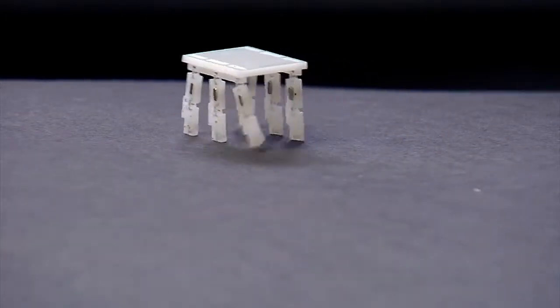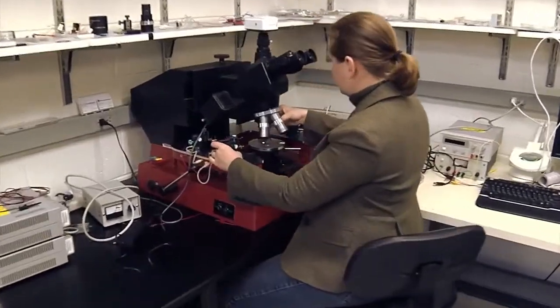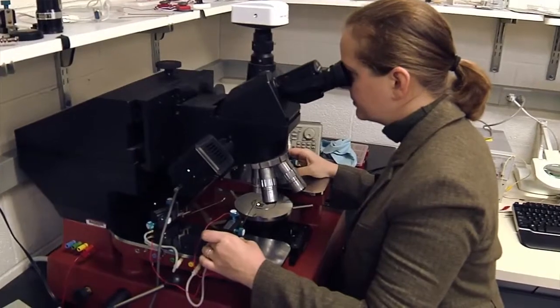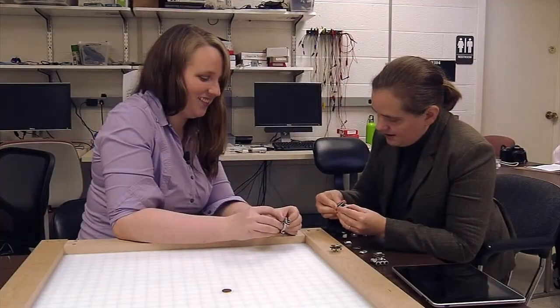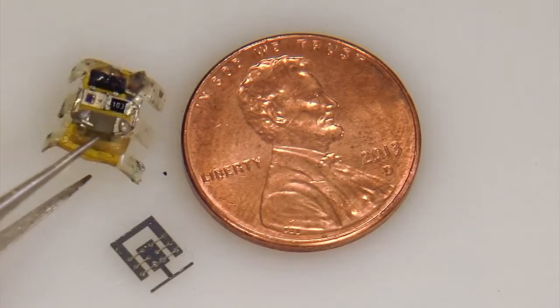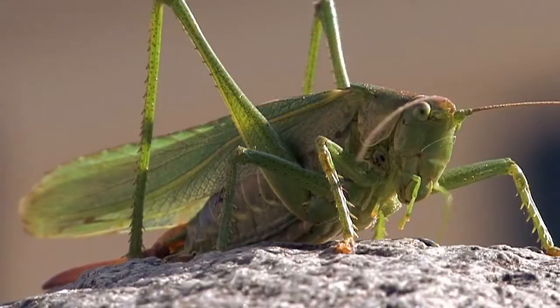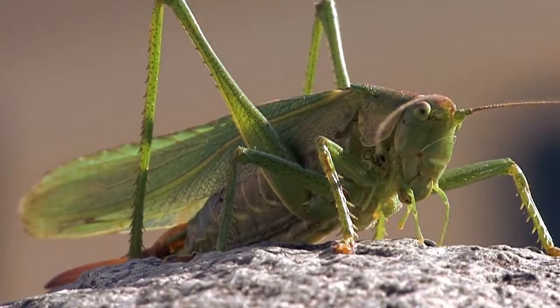What if robots could have the same moves? With support from the National Science Foundation, engineer Sarah Bergbreiter and colleagues at the University of Maryland are building micro-robots using insects as inspiration, starting with their legs.